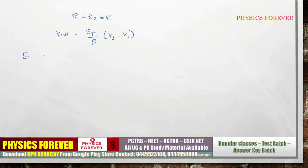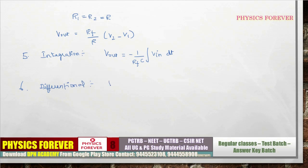For the integrator, the output is: Vout = −(1/RFC) × ∫Vin dt, where a capacitor is connected as the feedback element. For the differentiator, the output is: Vout = −RFC × d(Vin)/dt, where RF is the feedback resistance and C is the capacitance. Don't forget to include the negative sign.